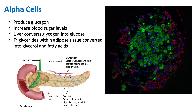Glucagon travels to the liver cells, muscle cells, or adipose tissue and signals that blood glucose is low. The liver then converts glycogen — many glucose molecules stored together — into glucose. In adipose tissue, triglycerides are broken down into glycerol and fatty acids, which can also be used to produce energy. In summary, alpha cells produce glucagon during low blood glucose, signaling the liver, muscle, and adipose tissue to break down glycogen or triglycerides for energy.